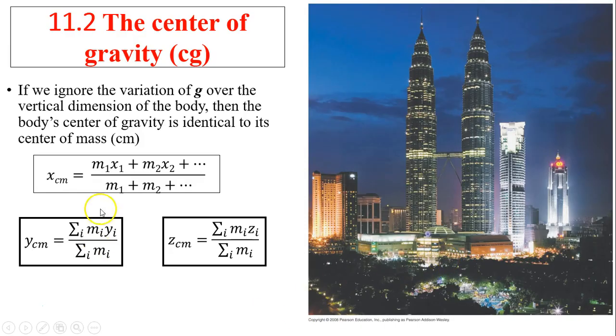Next one, center of gravity. The center of gravity, if we ignore the variations of g over vertical dimensions of a body, then the body's center of gravity is identical to its center of mass. Because we know g actually varies from the center of Earth. But if we ignore the variations, the height is very small compared to the distance of the object to the center of the Earth. So if we ignore it, we can say the center of gravity is identical to the center of mass. And this is how we calculate the center of the mass in x dimension, y, and z dimension.